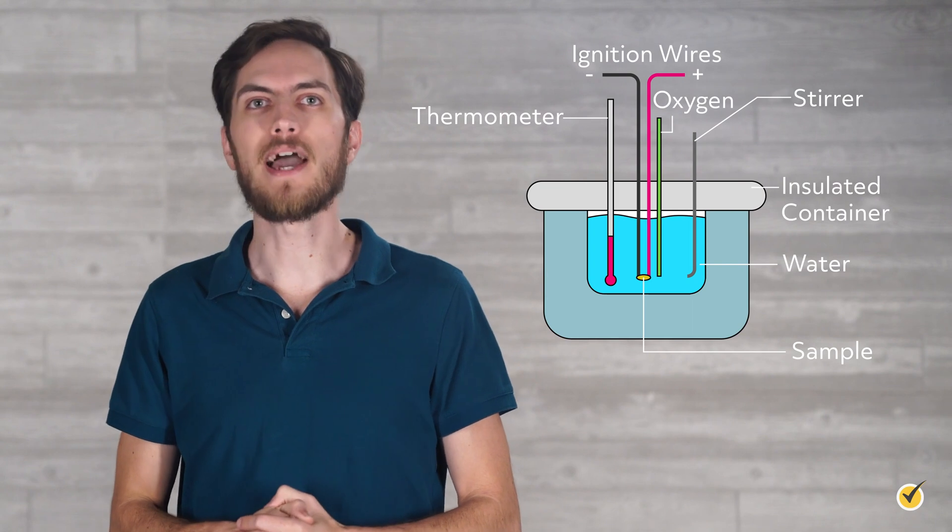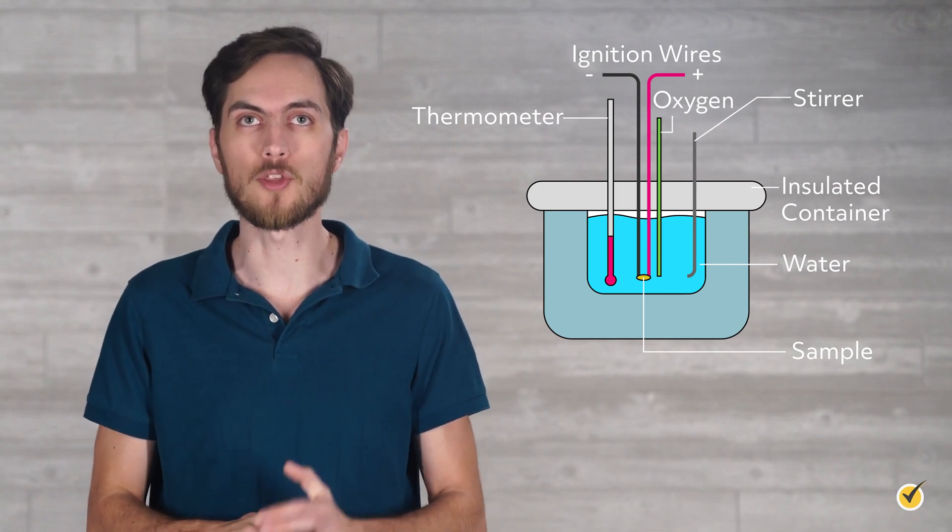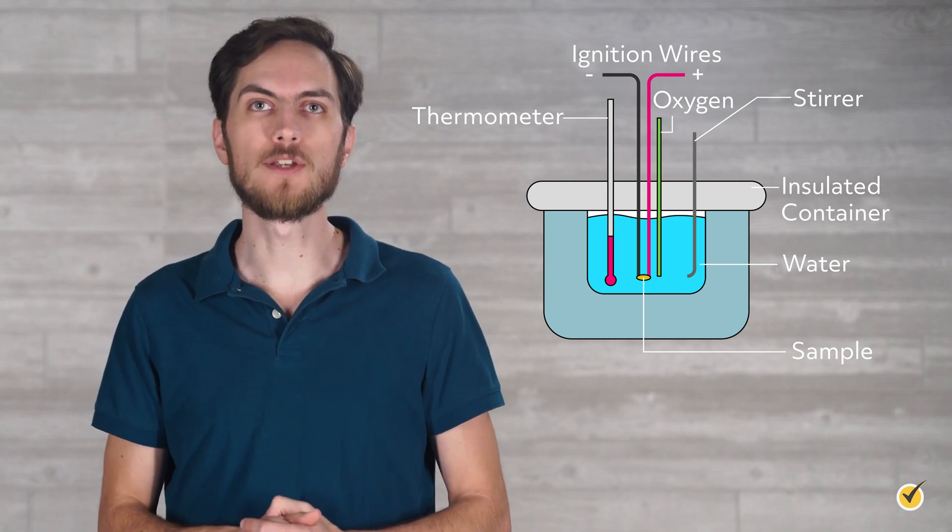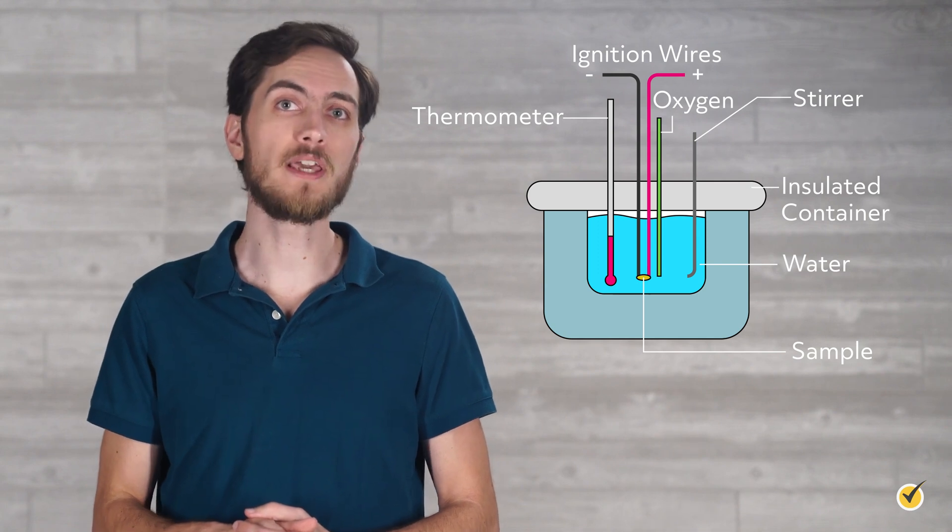A popular setup is the BOM calorimeter, which functions at constant volume rather than constant pressure like the two models we demoed today. Along with measuring the heat capacity of substances, calorimeters can be used to measure the heat released or absorbed during chemical reactions.